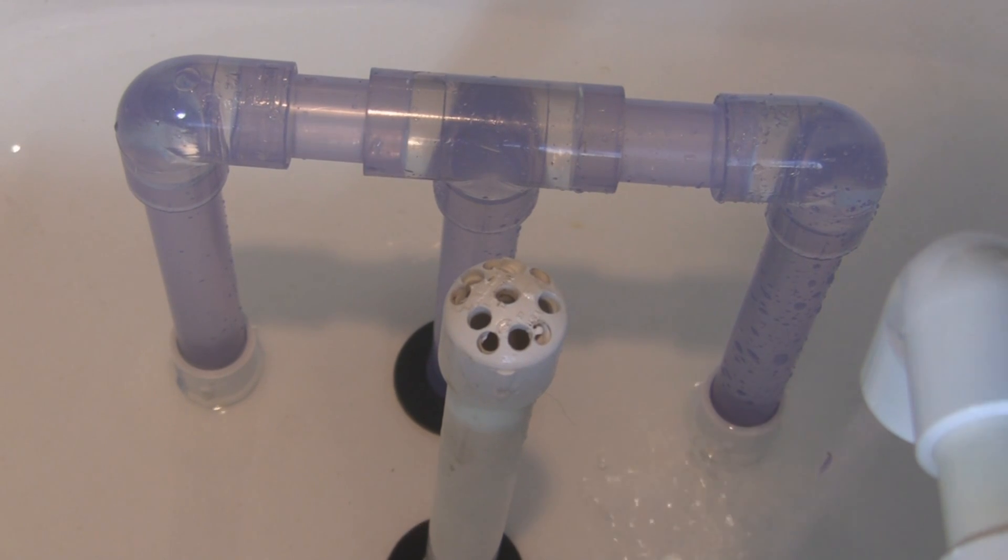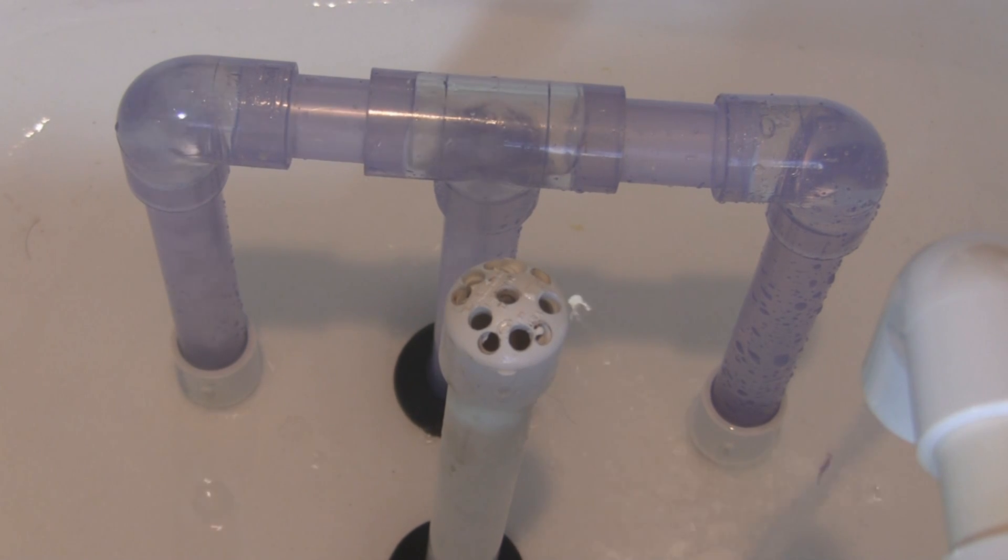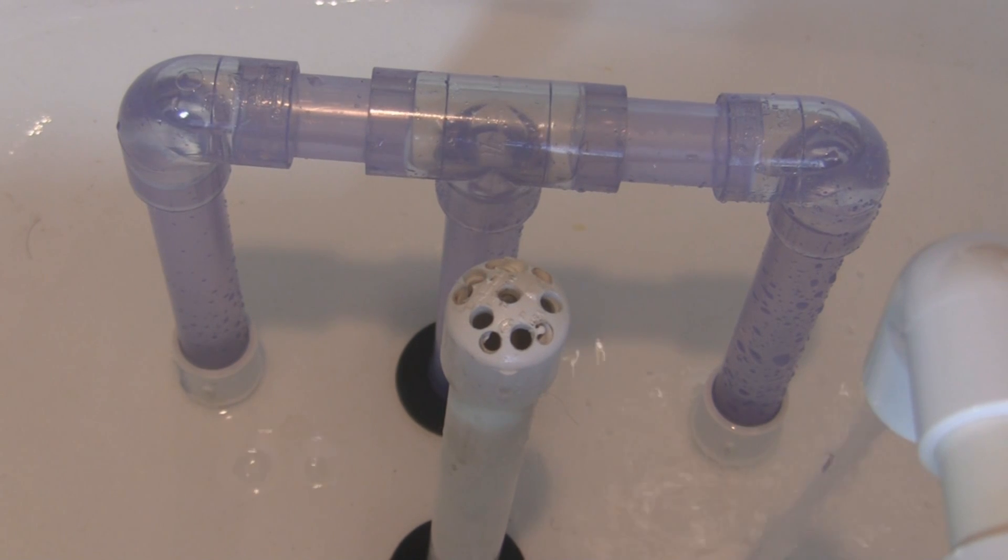So our grow bed is almost empty and you'll see the siphon start to break. Often bubbles will come up one side, not both. It's not quite broken yet. And this is why the elbow at the bottom of the drain pipe is important. Having that three-quarter inch elbow allows air to enter from the bottom of the drain pipe to break the siphon.